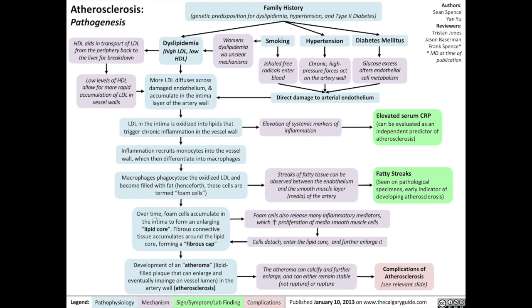Back to the pathophysiology: over time, the foam cells accumulate in the intima to form an enlarging lipid core. This lipid core has a fibrous connective tissue layer accumulating around it, forming a fibrous cap. Foam cells also release many inflammatory mediators, which increases the proliferation of medial smooth muscle cells. These cells detach, enter the lipid core, and further enlarge it.